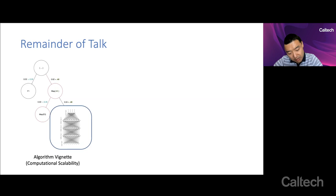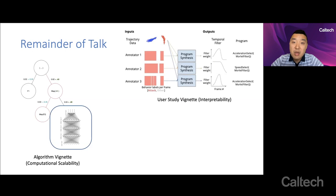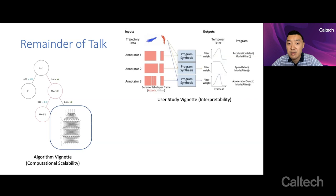So for the remainder of this talk, I think I have about maybe 12 minutes or so. I'm going to give you three vignettes. One is on an algorithmic vignette, how this new class of models requires new learning algorithms, which is the technical work that many members of my group engage in. A user study vignette, where we partner with domain experts to help use these tools to build models that they can use for downstream analysis for their scientific mission. And then a data augmentation vignette, which studies how we can use these tools to provide increased data efficiency for standard machine learning.